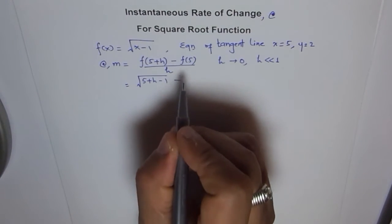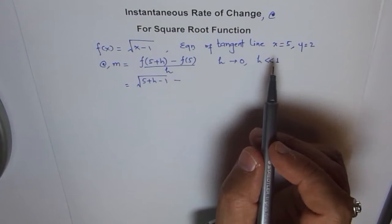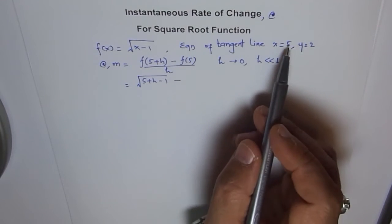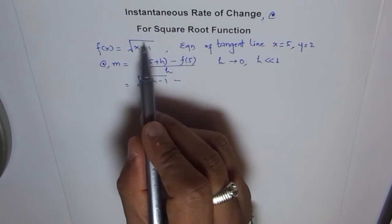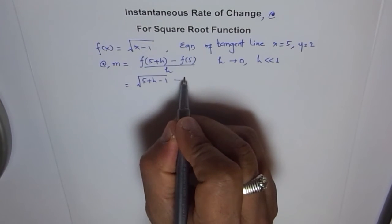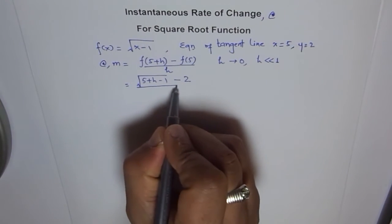Now let's go through the solution. What is f(5+h), where the function is square root of x minus 1? So what do we do? We replace this x with 5+h. So we get square root of 5+h minus 1, minus f(5). f(5) is the value of function at 5, and we know f(5) is 2.